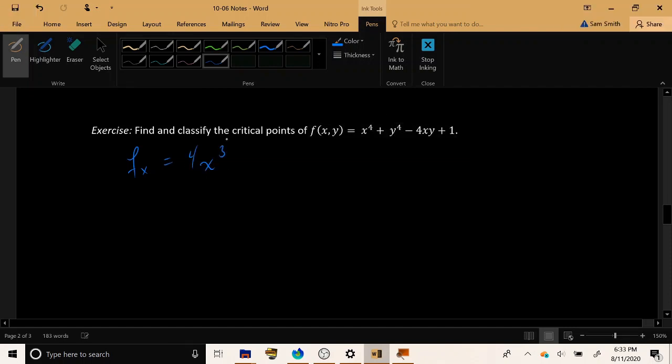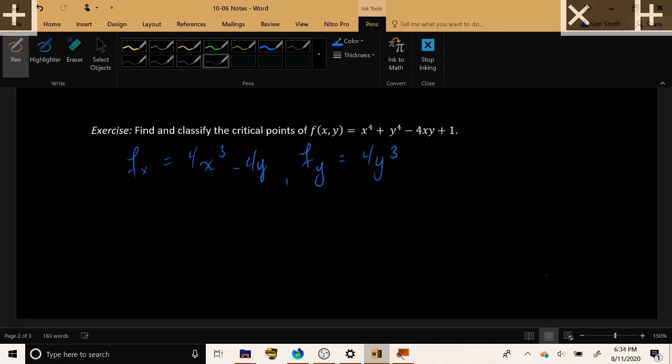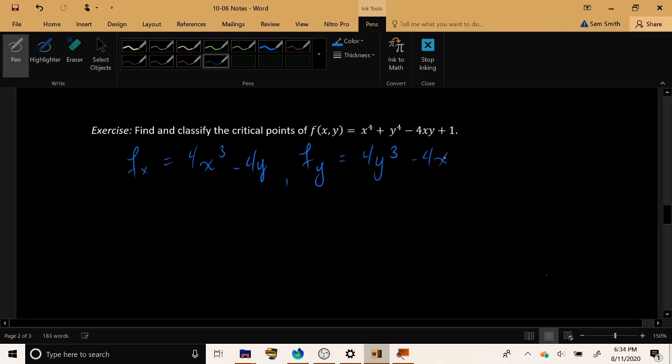So f sub x, by power rule, 4x cubed from the first term, nothing from the second term, minus 4y from the third term, nothing from the last term. f sub y, nothing from the first term, 4y cubed from the second, and then from the third, minus 4x, and then nothing from plus 1.